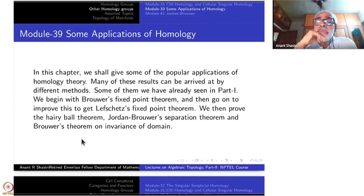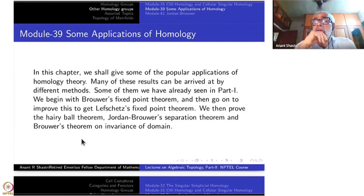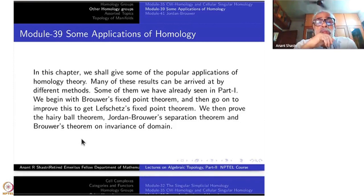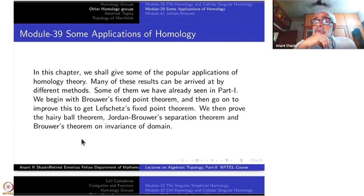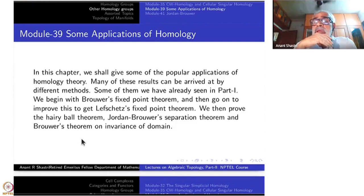We begin with the famous Brouwer's fixed point theorem, and then go on to prove the Lefschetz fixed point theorem, which is an improvement on Brouwer's fixed point theorem. We then prove what are called the Hairy Ball theorem, the Jordan-Brouwer separation theorem, and Jordan-Brouwer invariance of domain. These are all very popular results, and when they were proved, algebraic topology became extremely popular.